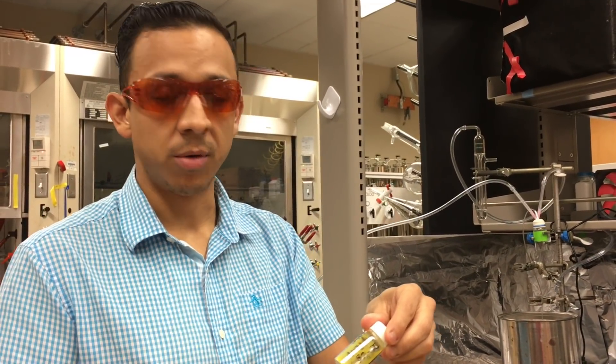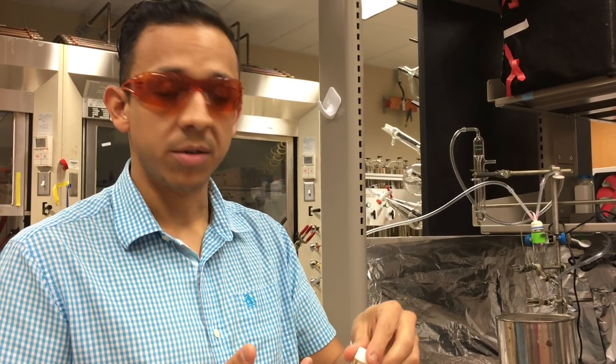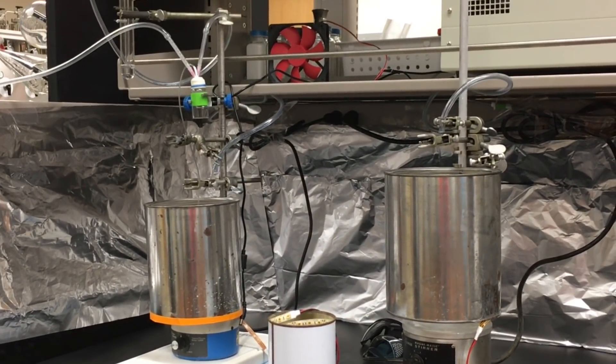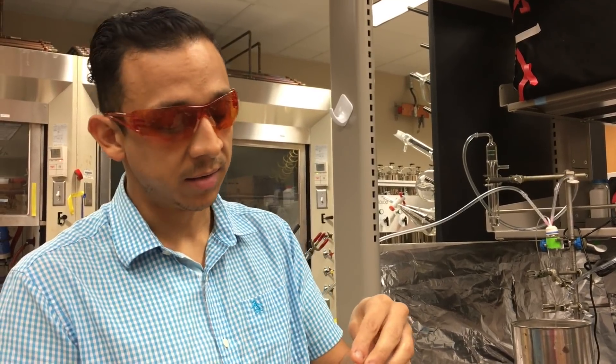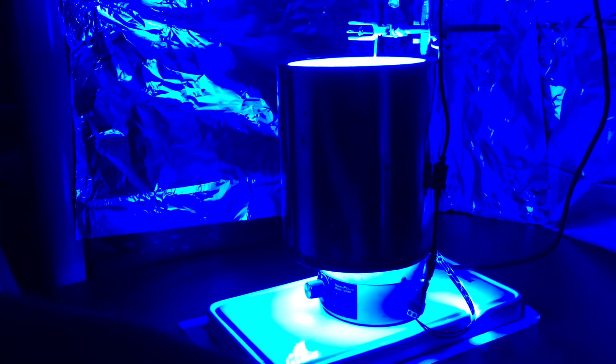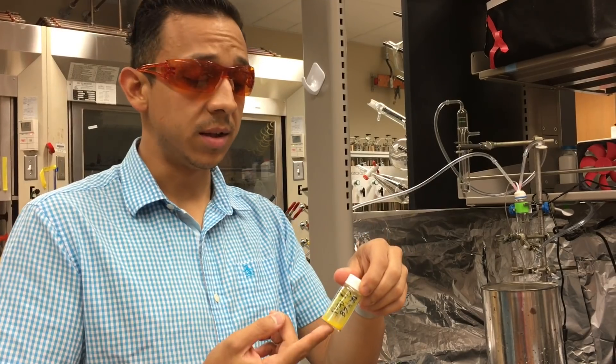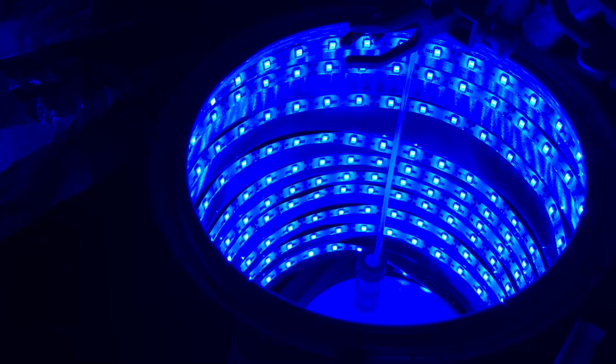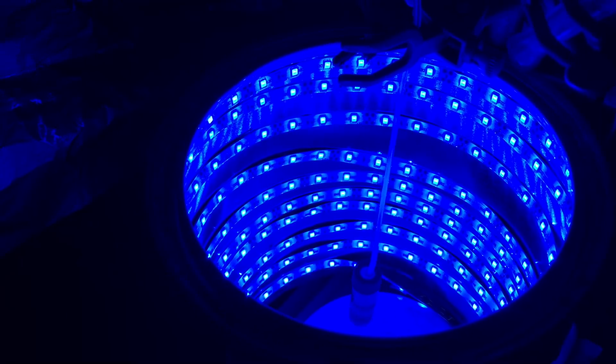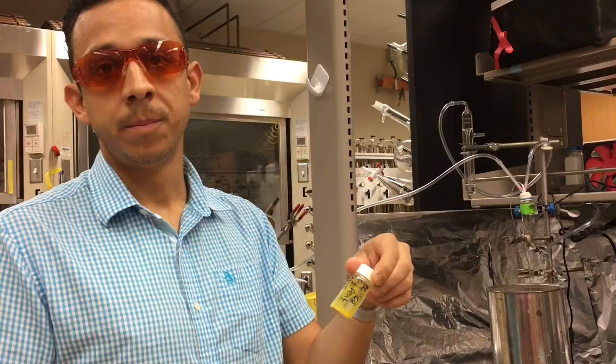This particular metal organic framework or MOF is made out of titanium and an organic compound that captures a specific wavelength of light, in this case, blue light. So when this MOF captures the blue light and the carbon dioxide is stored inside, the blue light will add the energy necessary to reduce the carbon dioxide from carbon dioxide to formate.